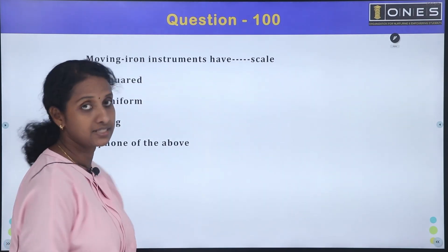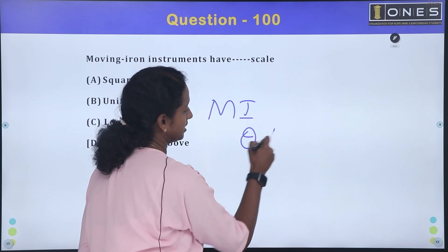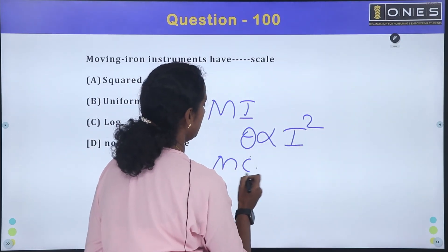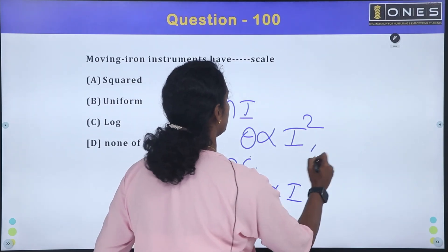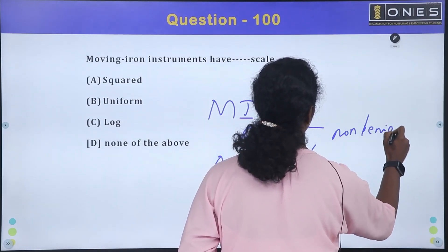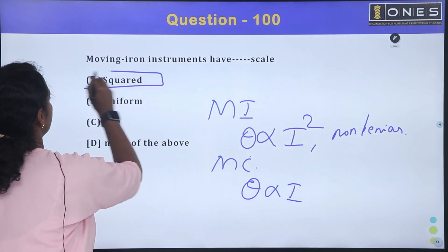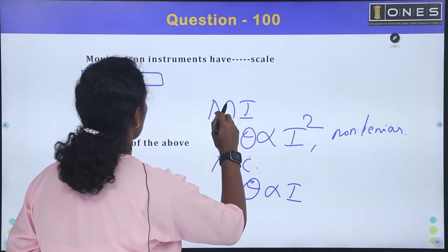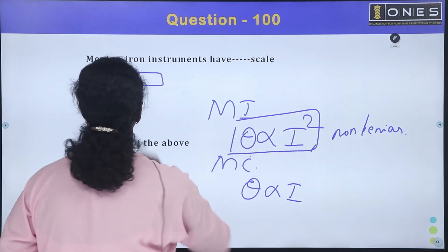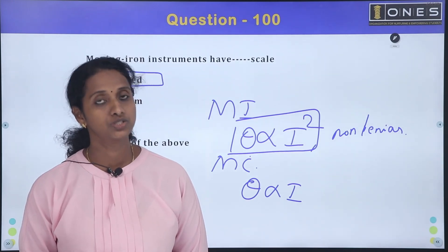Moving iron instruments have a non-uniform (squared) scale, because deflection theta is proportional to i squared. In contrast, moving coil instruments have a linear scale where theta is proportional to i. So moving iron instruments have a non-linear, squared scale.